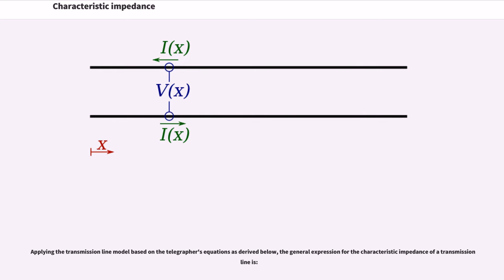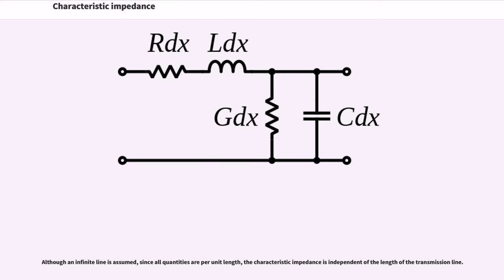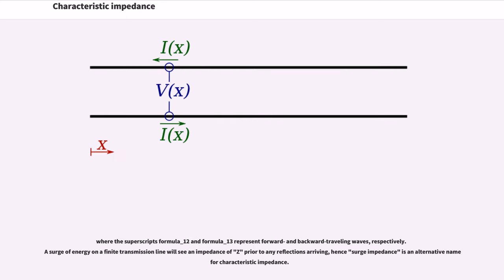Although an infinite line is assumed, since all quantities are per unit length, the characteristic impedance is independent of the length of the transmission line. The voltage and current phasors on the line are related by the characteristic impedance, where the superscripts represent forward and backward traveling waves, respectively.